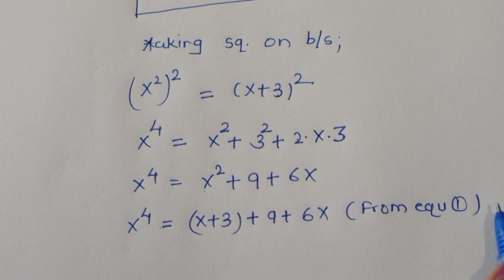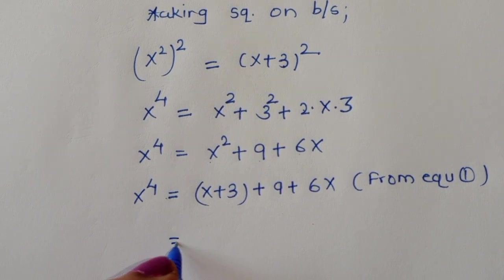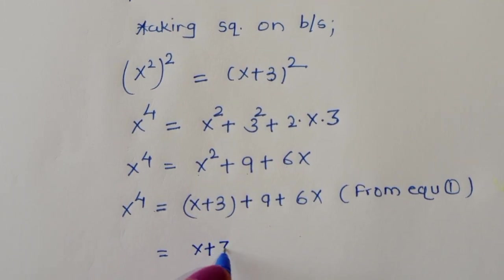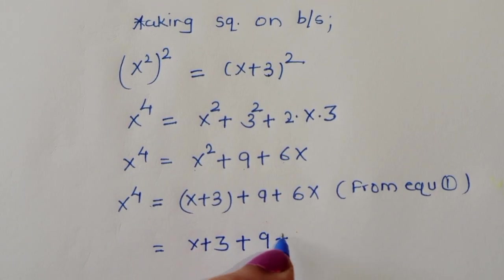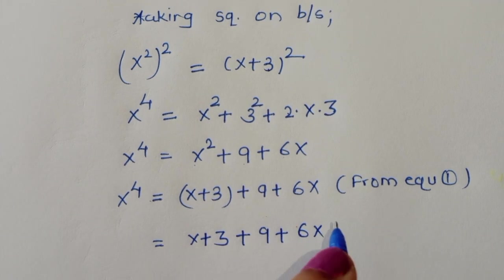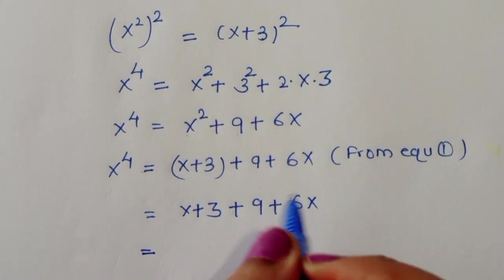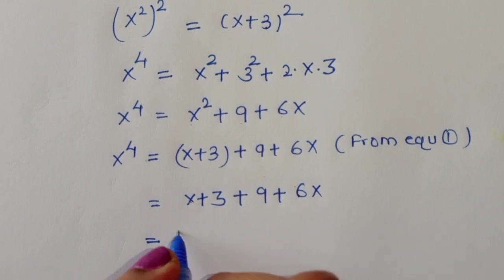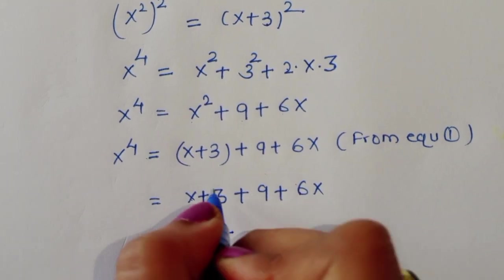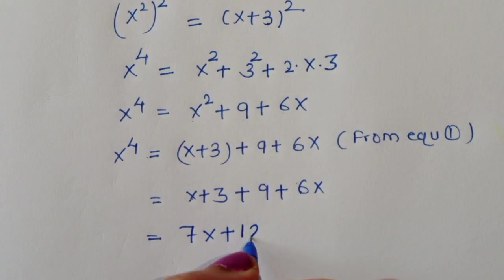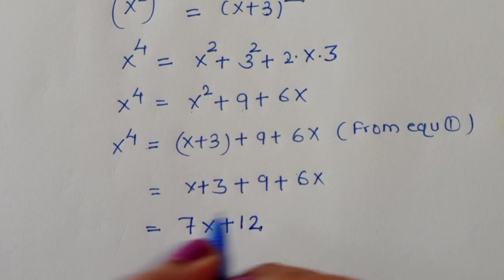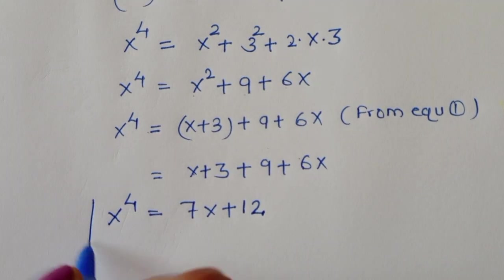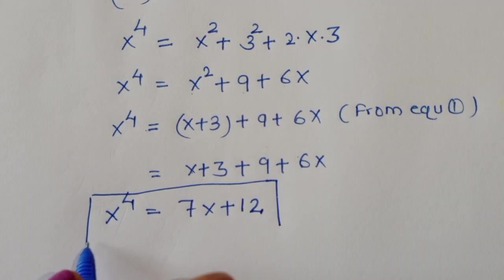Simplifying: x⁴ = x + 3 + 9 + 6x = 7x + 12. So the value of x⁴ = 7x + 12.